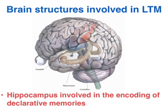Procedural memories are stored by different areas of the brain — for instance, the cerebellum, as well as the motor cortex, and a few other areas of the brain.